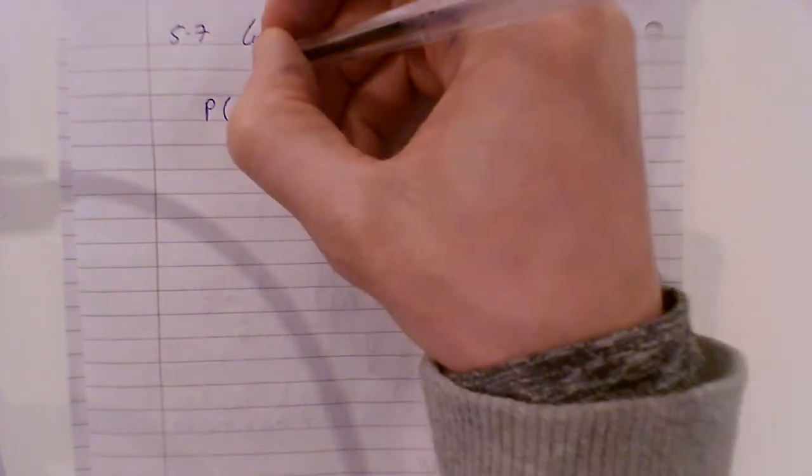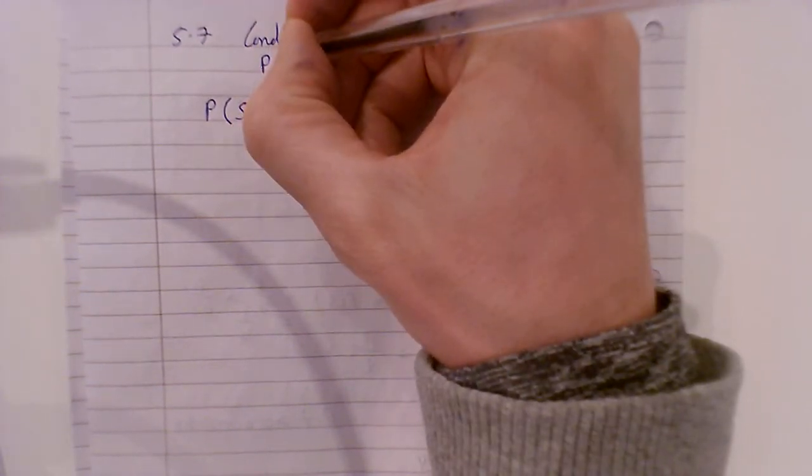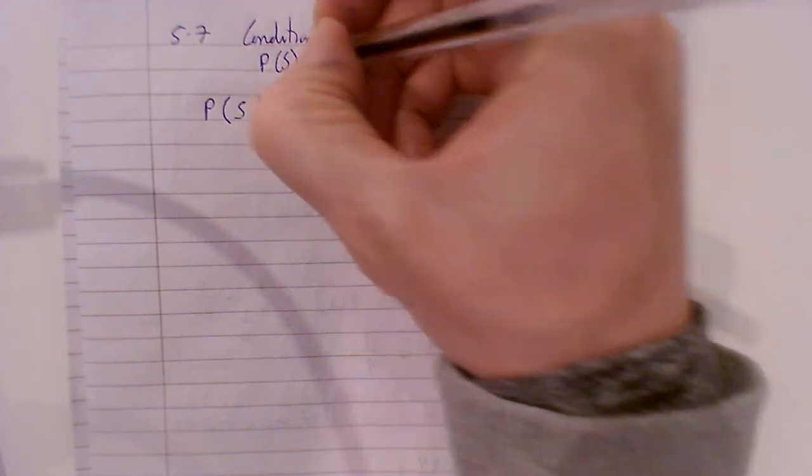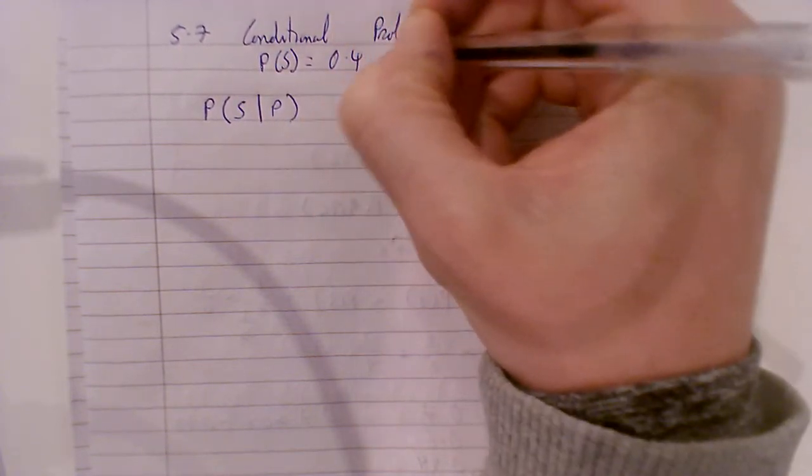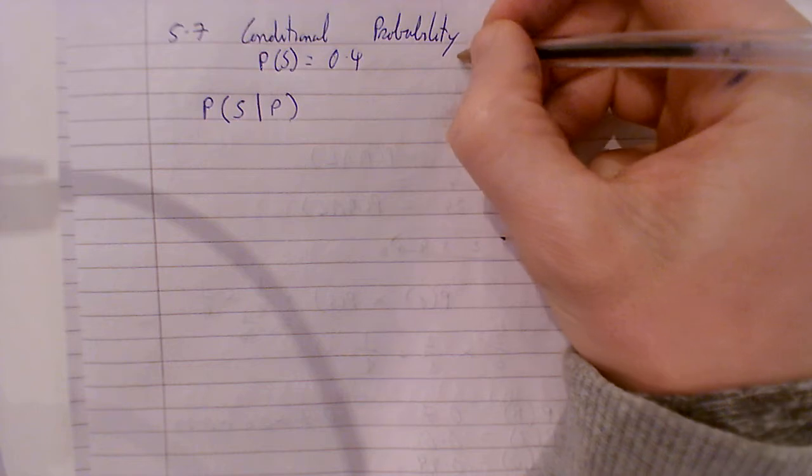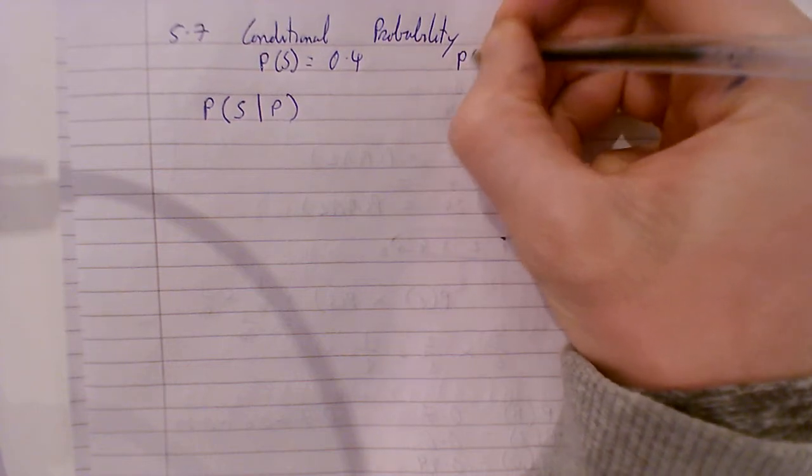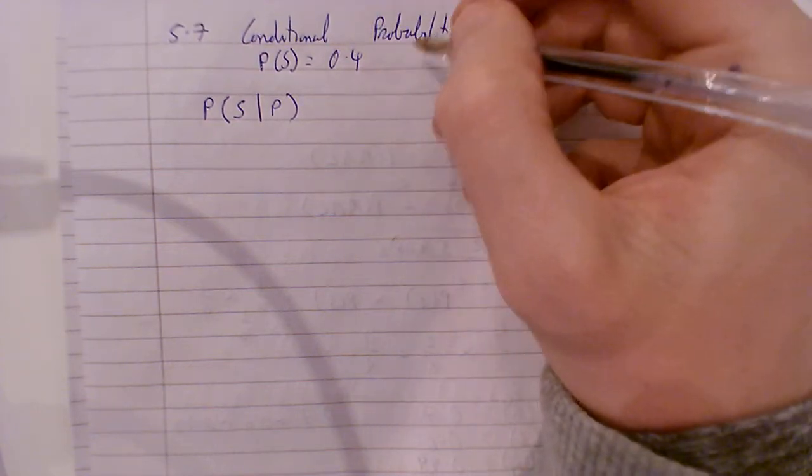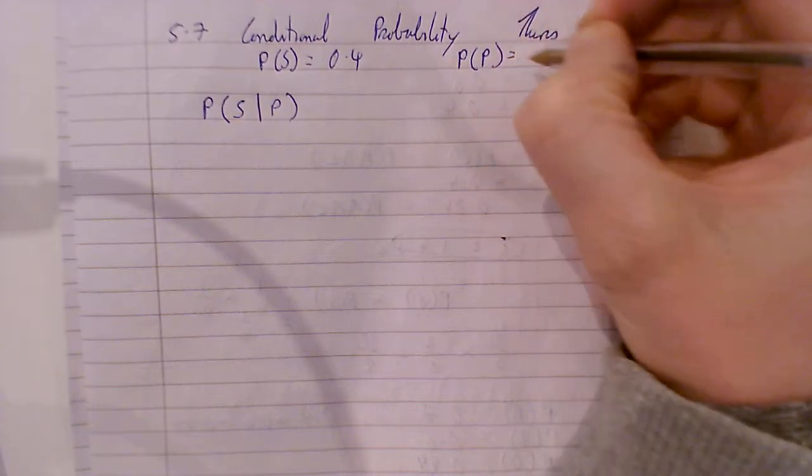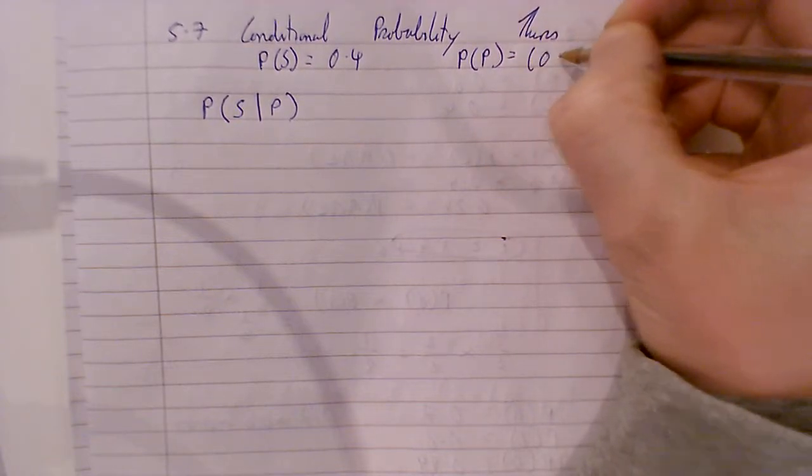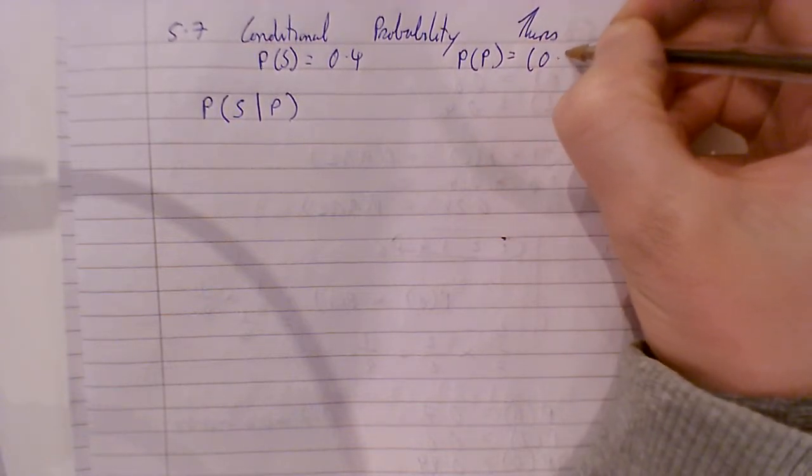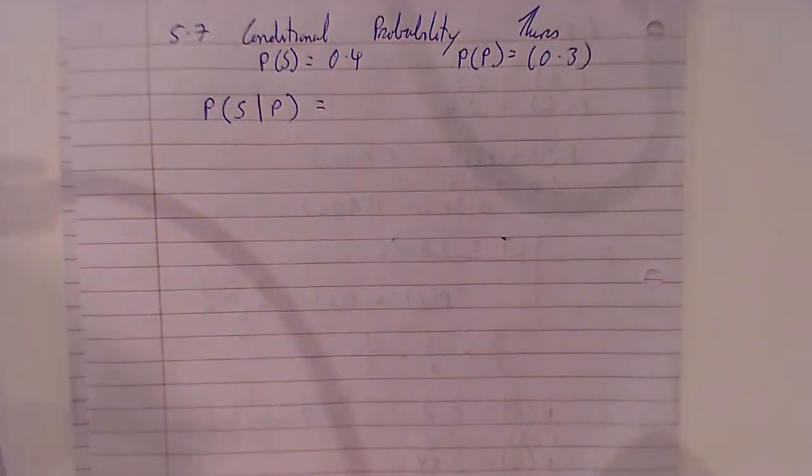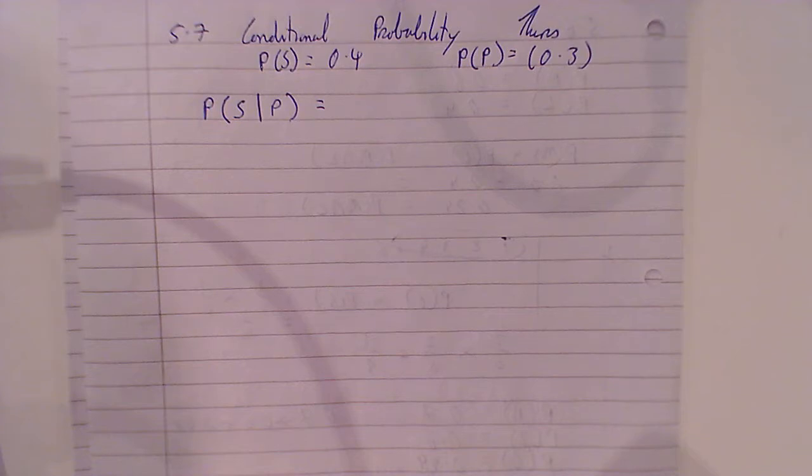So we're looking for the probability that Louie scores in a championship game if he starts. The probability that Louie starts is 0.4 or 4 out of 10. The probability he scores if he plays is 0.3. We want to know the probability that Louie scores given that he starts.